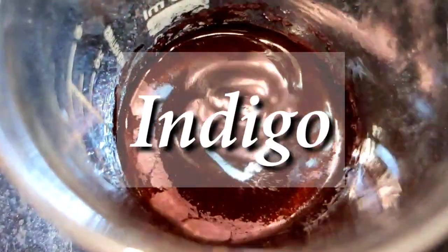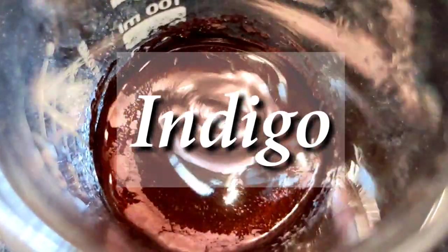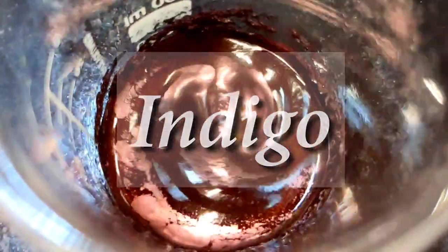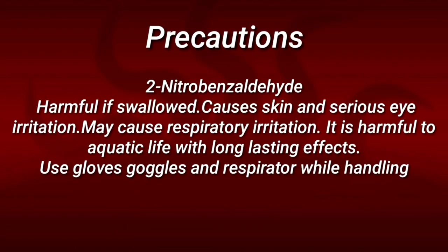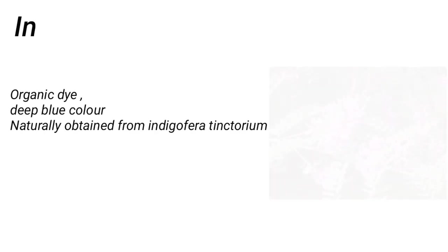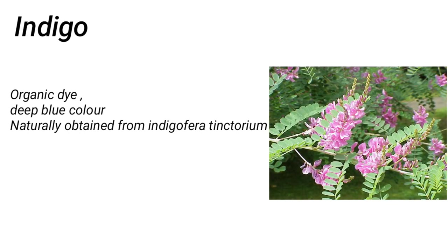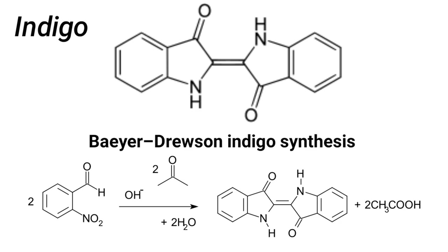Hello friends! In this video we will be making a very common dyeing agent: indigo. Indigo is a dye which has been used since a long time in history; it has a deep blue color and was first extracted naturally from the plant Indigofera tinctoria. In this video we will be chemically synthesizing indigo using the Baeyer-Drewsen indigo synthesis method, which is an aldol condensation of two molecules of 2-nitrobenzaldehyde.